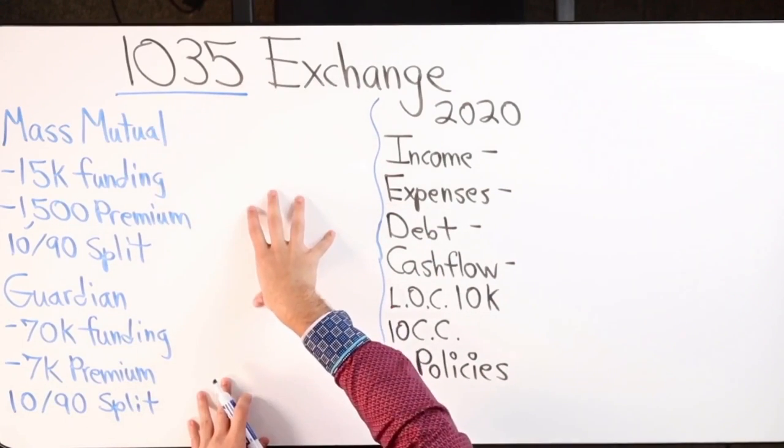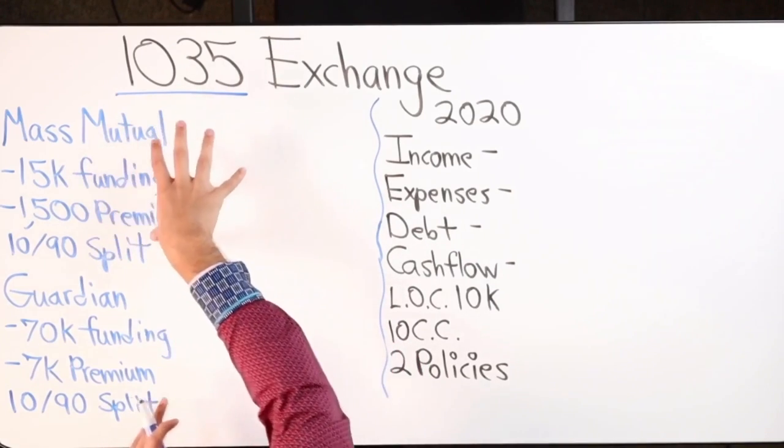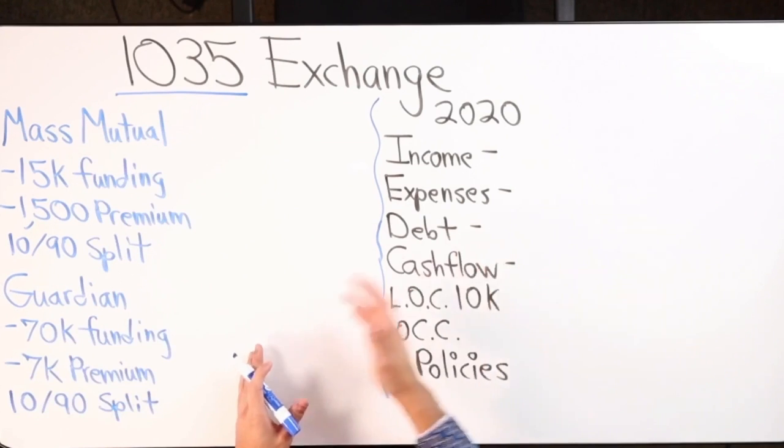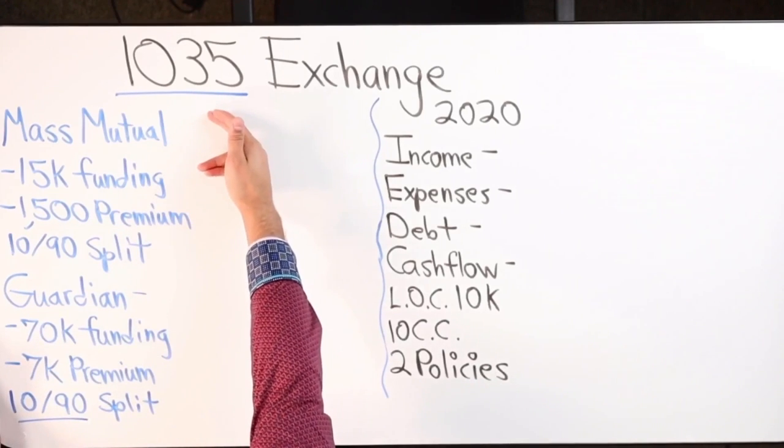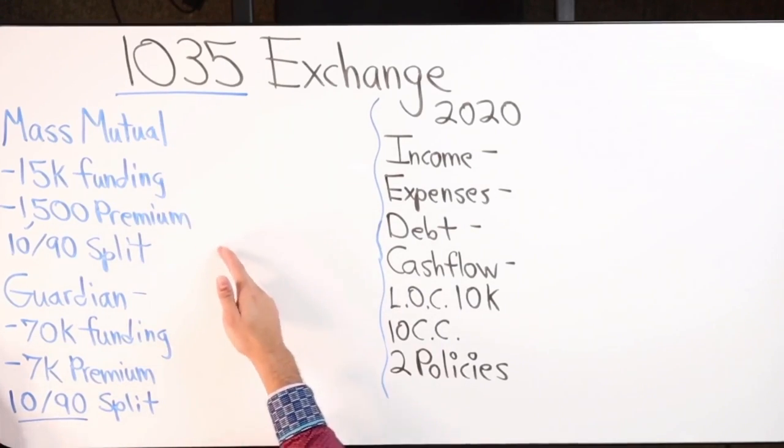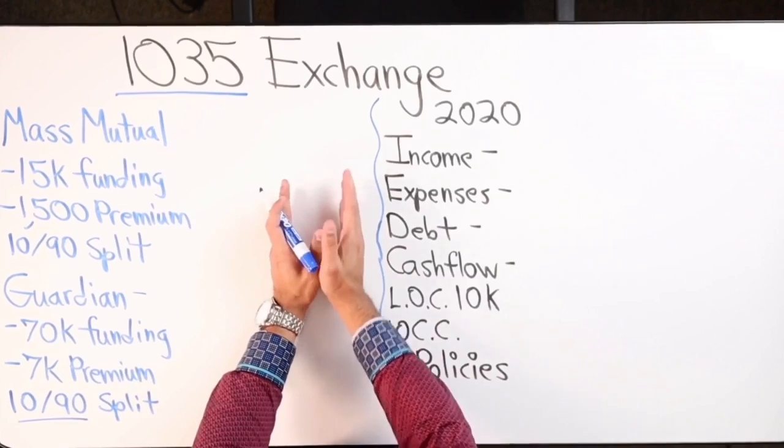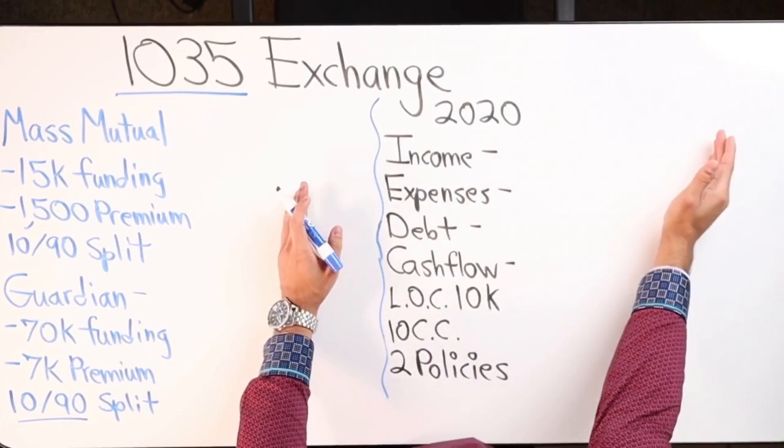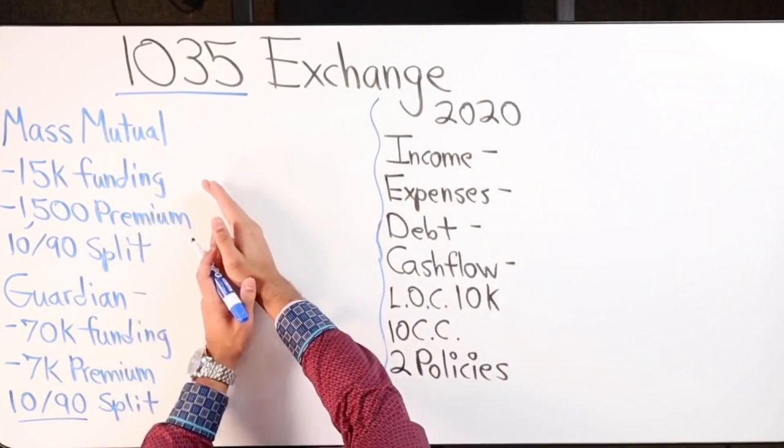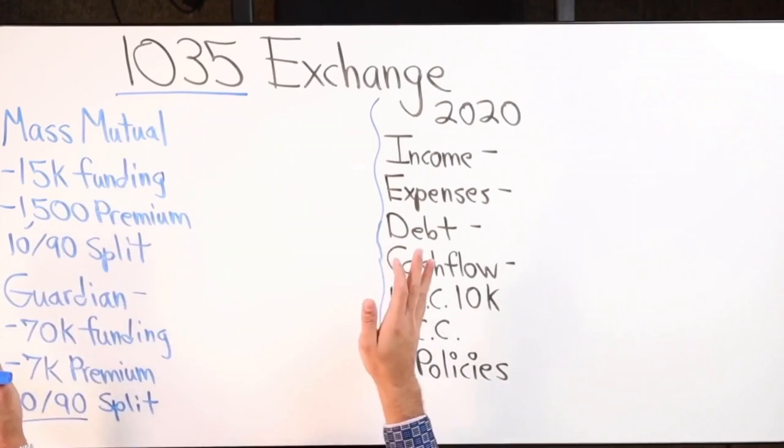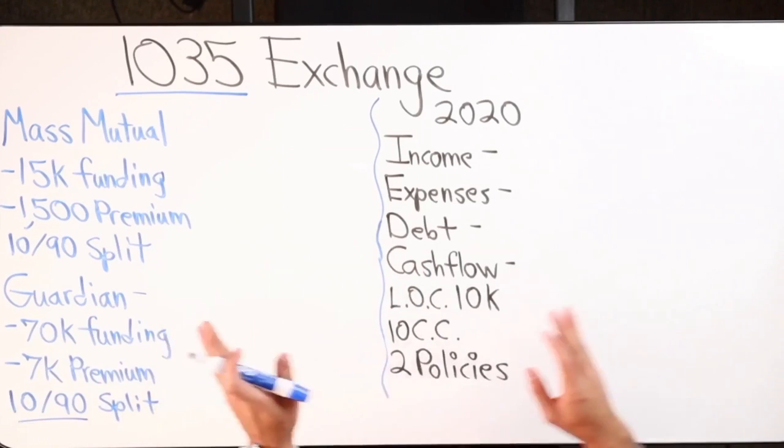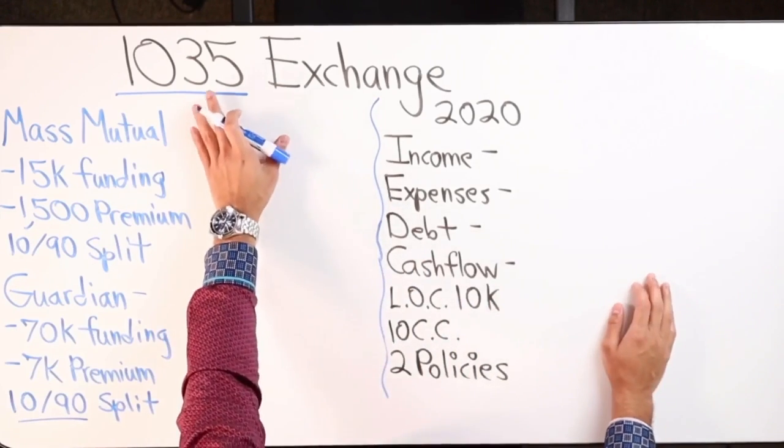So now let's fast forward to 2020. Here's what's going to happen now using the 1035 exchange. Before I share that part, let me just say that in the process of 10xing my income, I also created a second policy using Guardian, which is one of the four major mutuals, putting in 70k a year, premium 7k. Notice the split is a 10-90. So using the 1035 exchange, we do the same thing with Mass Mutual. So I'm going to move my existing Mass Mutual policy where I was putting in 6k a year, premium's 3k, and I want to move it into a new policy where I'm funding 15k a year, premium's $1,500 bucks, do a 10-90 split, call it a day.